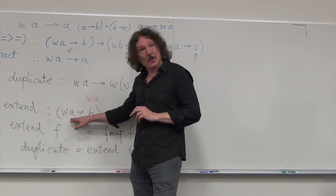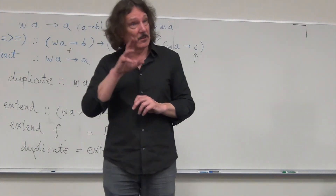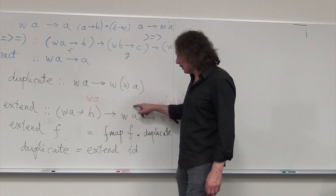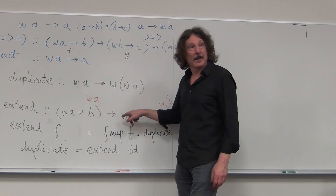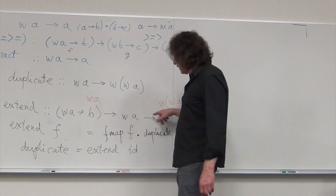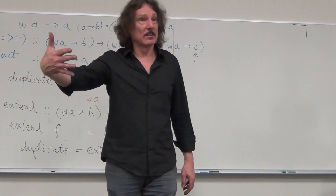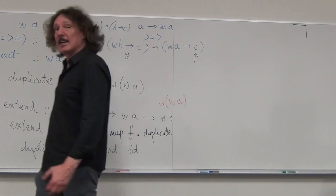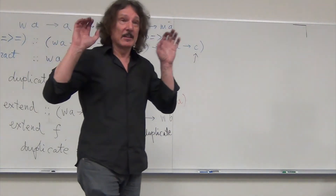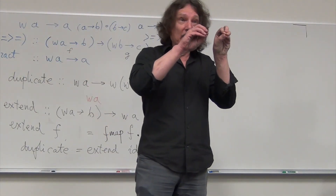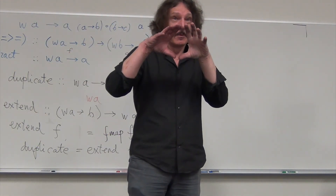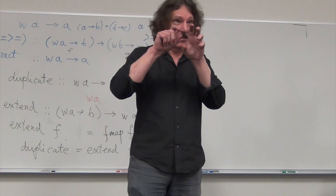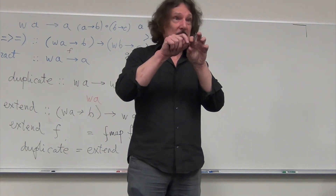Once you have this Kleisli arrow that does this evaluation in the tiny neighborhood, you can just extend it over the whole grid, and it will give you the new generation. That's how it works. And duplicate will take this grid and replace every location with a tiny grid which is the same grid as before except focused on that position.